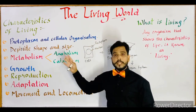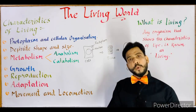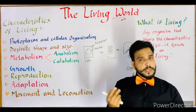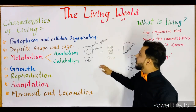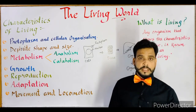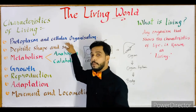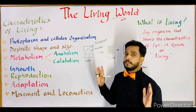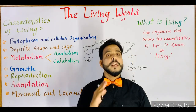Inside the cell, protoplasm is filled, and within the protoplasm different kinds of cell organelles are present, such as mitochondria, Golgi body, chloroplast, and so on. Protoplasm is the living content which fills inside the cell. All living beings in this world consist of protoplasm in their cells, and their body is made up of cells. So cellular organization — point number one — means all living beings have protoplasm and their body is made up of cells.